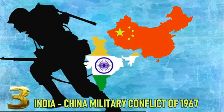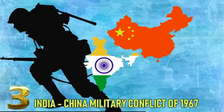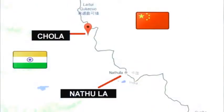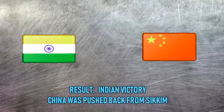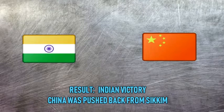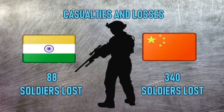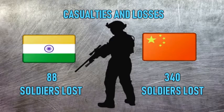The India-China military conflict of 1967 was not a full war but a conflict. The conflict location was Nathu La and Cho La on the border between China and Sikkim. Result: Indian victory — China was pushed back from Sikkim. Casualties: India lost 88 soldiers killed; China lost 340 soldiers killed.